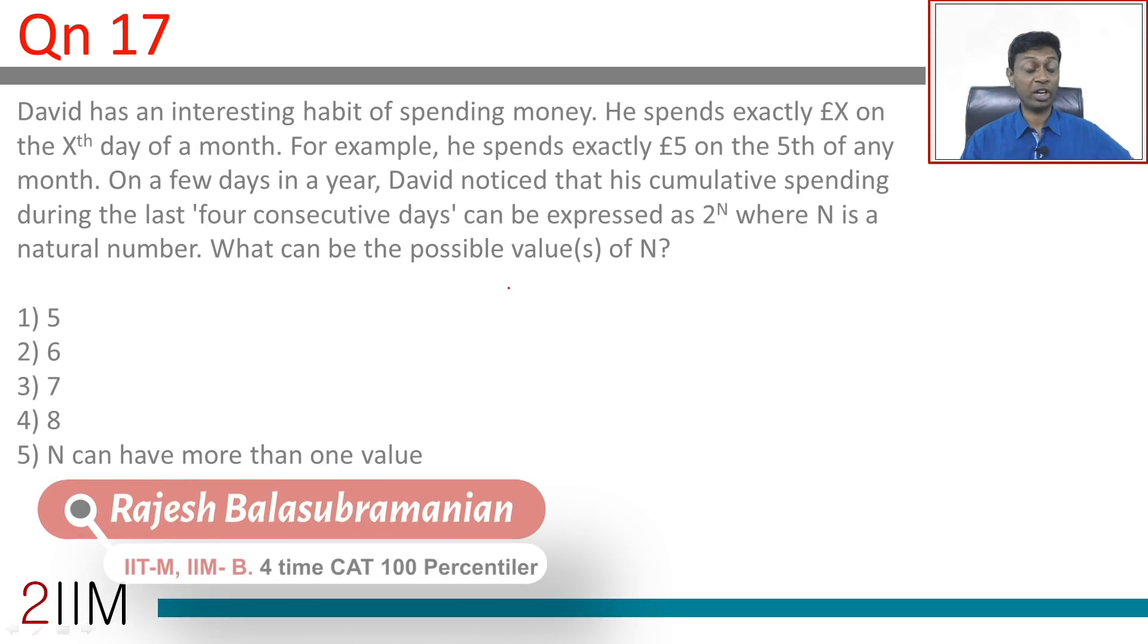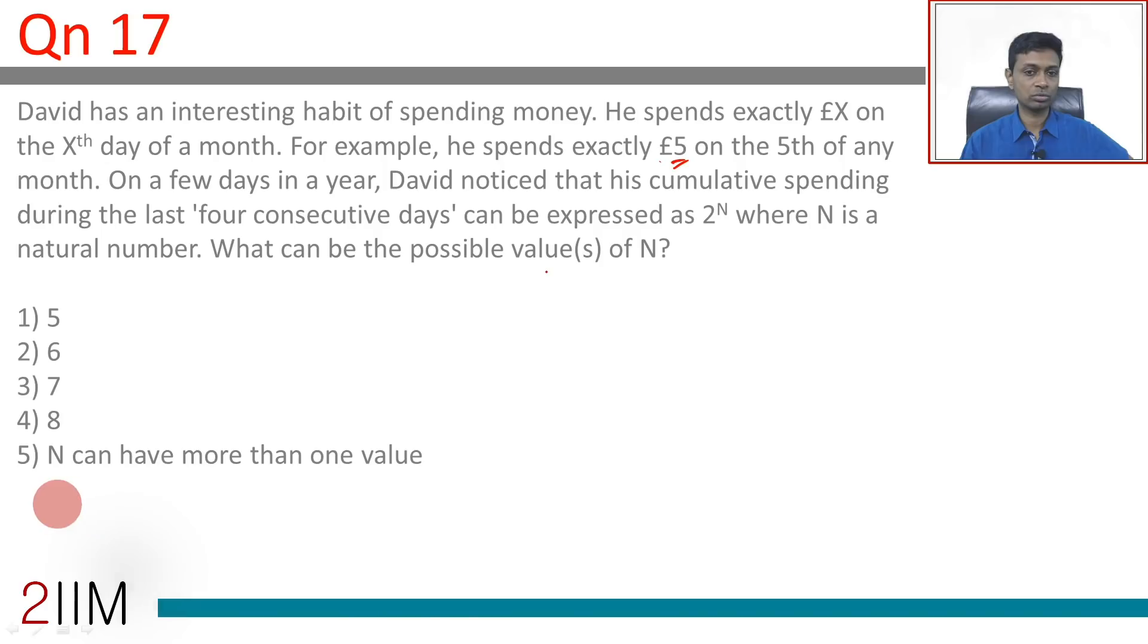David has an interesting habit of spending. He spends exactly £X on the Xth day of the month. For example, he spends £5 on the 5th. In a year, David noticed his cumulative spending during the last four consecutive days can be expressed as 2 power N, where N is a natural number. What are the possible values of N?